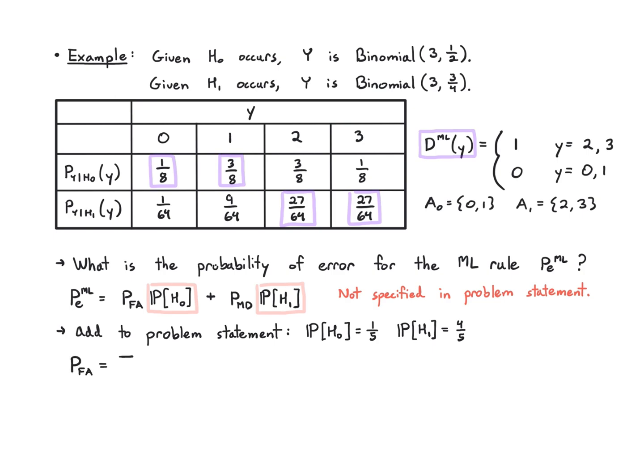Then the probability of false alarm from the formula in the previous video is just summing up over A₁, the conditional PMF of y given H₀. I'm just going to circle in green where this is happening. I have the probability of y given H₀ of 2, and the probability of y given H₀ of 3. Those are these 3/8 and 1/8 terms. And the reason I did that is I looked and saw that A₁ is 2 and 3, so I just summed up those values.